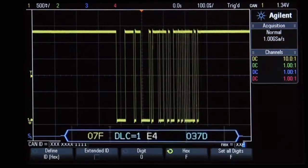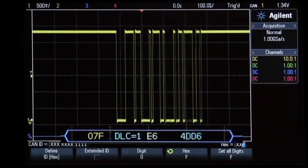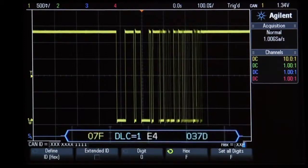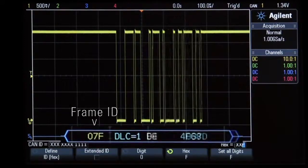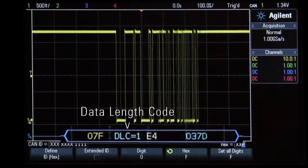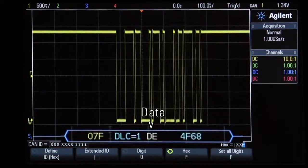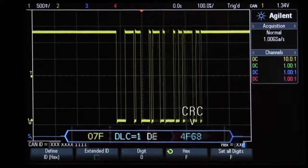What you see below the waveform is the time correlated decode trace. This particular data frame has a frame ID of 07F, followed by a data length code, followed by one byte of data, and finally followed by the CRC.